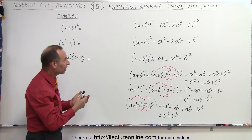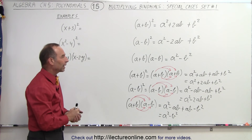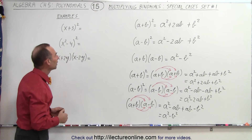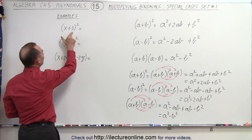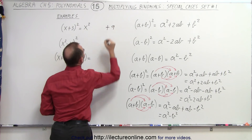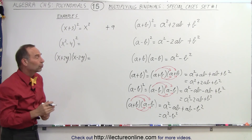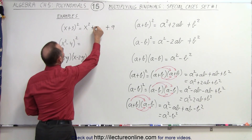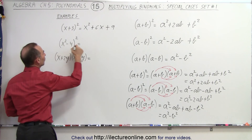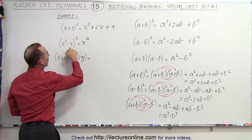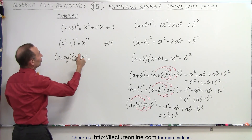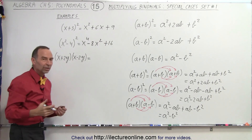Those three types of products come up so often in algebra that it's really helpful to simply remember how to do them without going through the full process — it will save quite a bit of time. So let's apply what we have. For x plus 3 quantity squared: the first term squared is x squared, the last term squared is 9, and twice the product of the two terms is 6x. For x squared minus 4 quantity squared: first term squared is x to the fourth, last term squared is plus 16, and twice the product is minus 8x squared.